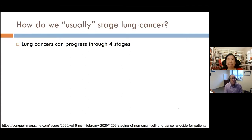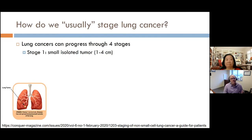Now that we've talked about diagnosing lung cancer, the next thing is staging. Cancer has these stages — in lung cancer, we talk about four different stages. Stage one cancer is when you have a really small, isolated tumor — about one to four centimeters — like that little yellow dot within the lung. A stage two tumor is still small but might be a bit bigger, and the tumor has started to spread locally, to nearby lymph nodes within that same area.